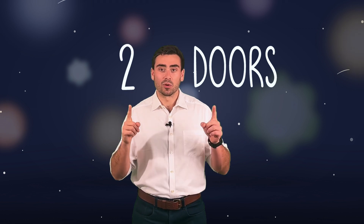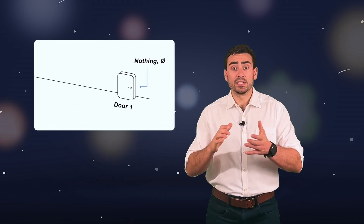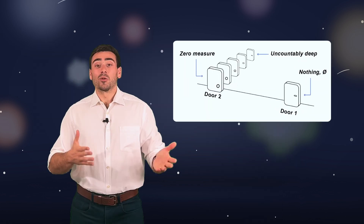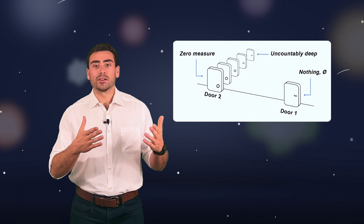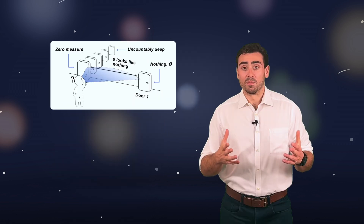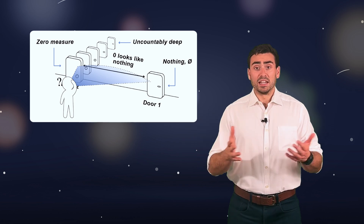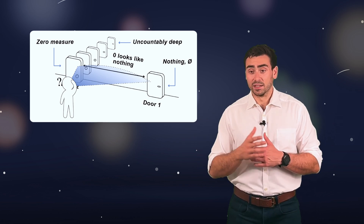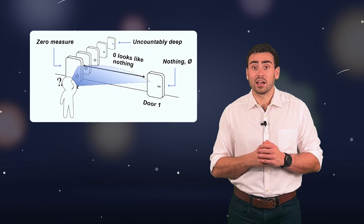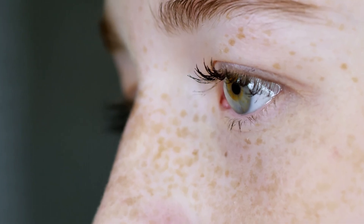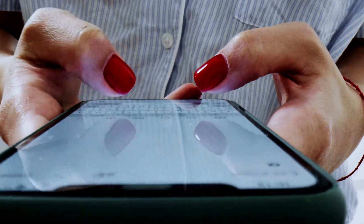To illustrate this point one last time, let's consider a scenario involving two doors. Door number one leads to a room that is completely empty — there's absolutely nothing there. While door number two leads to a room containing uncountably many doors with zero measure. From the outside, both doors look identical. And even if you open them, you're not going to be able to tell the difference between the door that has nothing inside and the door that has uncountably many objects. Even now, looking at the space between your eyeballs and the screen, can you tell whether there's nothing there or an infinity hidden behind the veil of nothingness?